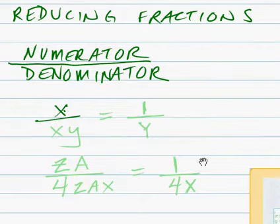So, x over xy, the answer to this is what? Well, we know we're going to cancel the x here on the numerator and the denominator, but we have to leave a 1 up at the top. So, 1 over y.